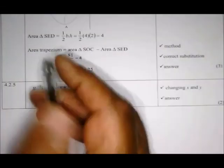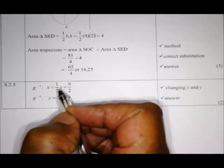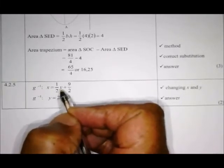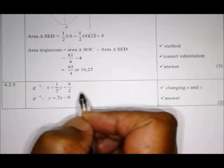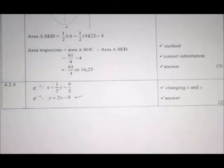Replace x with y and y with x. To make y the subject, multiply by 2 to get rid of the fractions. There's the inverse of the graph of g: g⁻¹(x) = 2x - 2m.